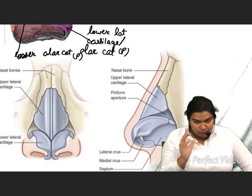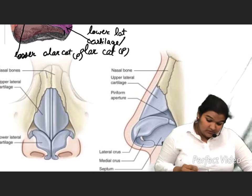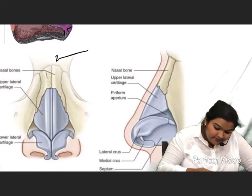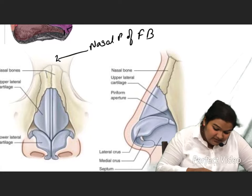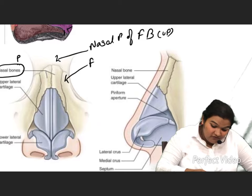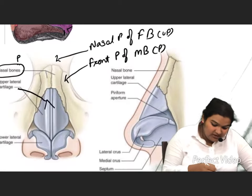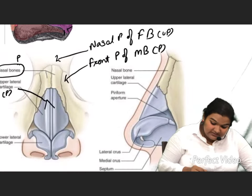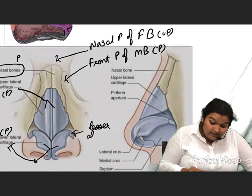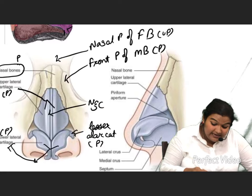Let us see another image for a clearer view. In the previous image we had the lateral view. In this image we have the frontal view. You can see the nasal process of frontal bone — it is unpaired. These are the nasal bones — paired. This is the frontal process of maxillary bone — paired. This is the upper lateral cartilage — paired. This is the lower lateral cartilage — paired. This is the lesser alar cartilage — paired. And this straight one is the nasal septum — unpaired.